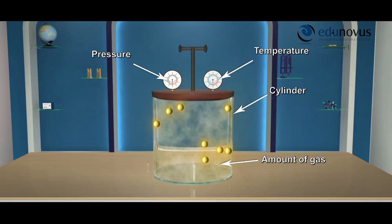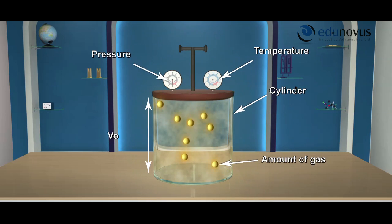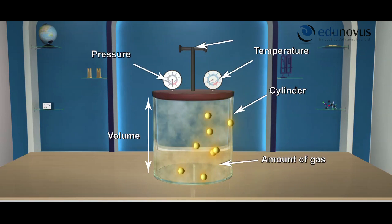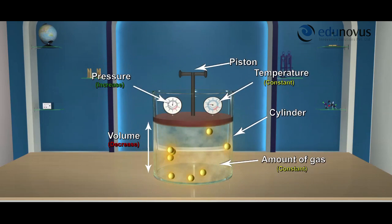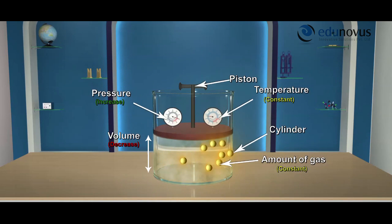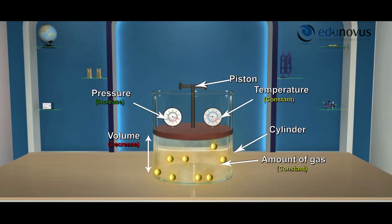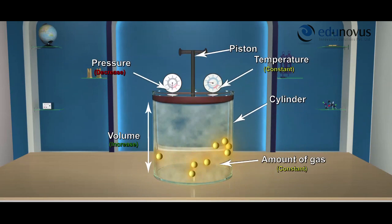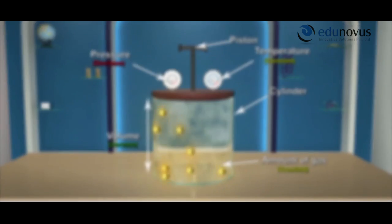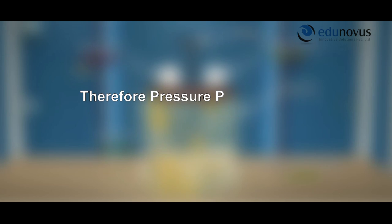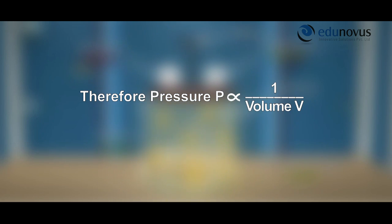Here, we keep the temperature and amount of the gas constant. When you compress the gas, the volume decreases, which in turn raises the pressure. When you increase the volume, the pressure goes down. Therefore, pressure is inversely proportional to volume. This is nothing but Boyle's law.